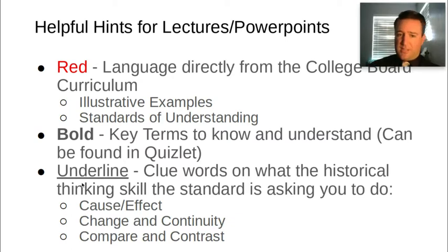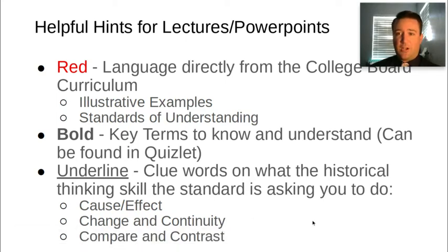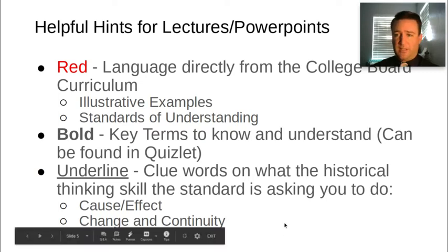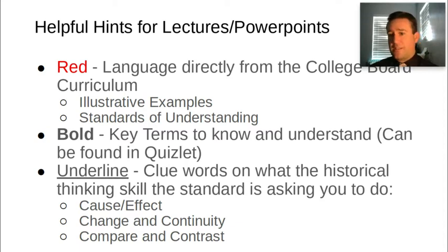The underlined words are clue words — they tell you exactly what the College Board is asking you to do. Typically they're asking you to show some sort of historical thinking skill: changes, continuities, causes, effects, comparisons and contrasts across different places, people, and times.